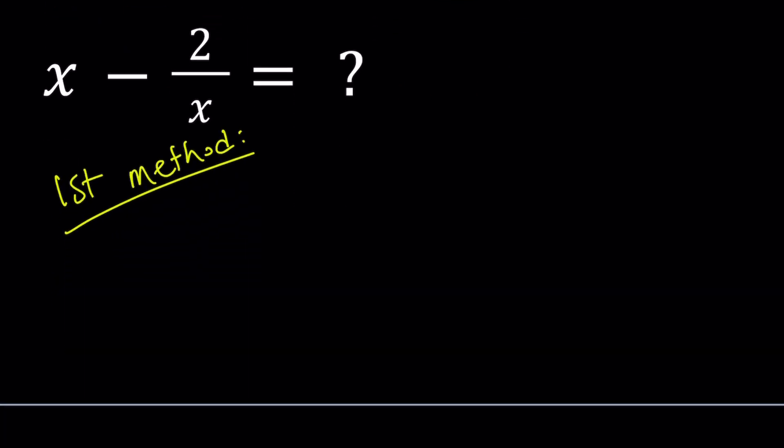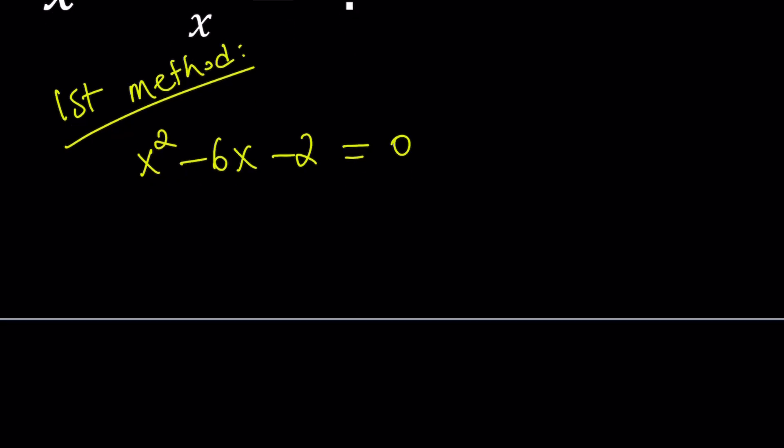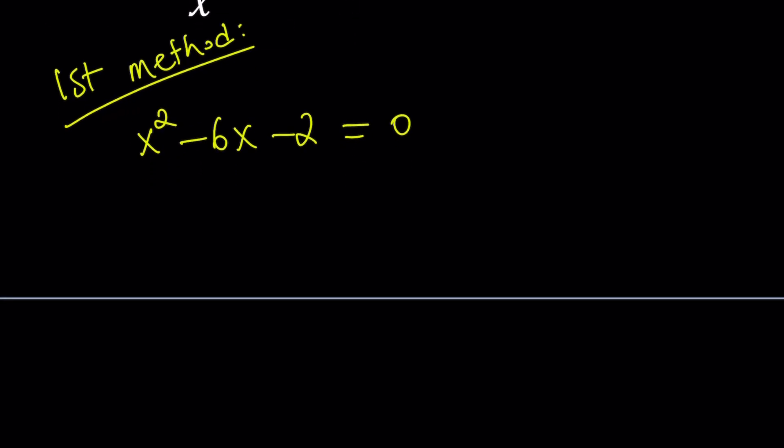So for the first method, I'm going to go ahead and solve this quadratic equation. It's easy to solve. It's not factorable, but you can use the quadratic formula. And if you do, you're going to get x equals 3 plus minus root 11.